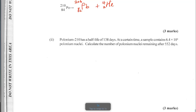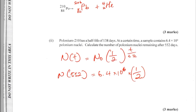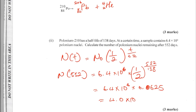Question D2: polonium-210 has a half-life of 138 days. A sample contains 6.4 × 10⁶ polonium nuclei. Calculate the number of nuclei remaining after 512 days. Using the formula N = N₀ × (1/2)^(t/t½), where N₀ = 6.4 × 10⁶, t = 512 days, and t½ = 138 days, substituting the values gives approximately 4.0 × 10⁵ polonium nuclei remaining.